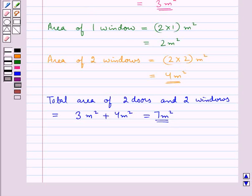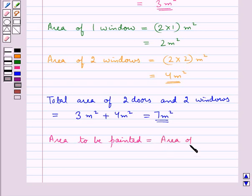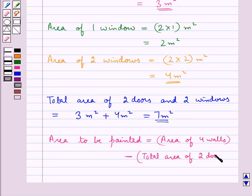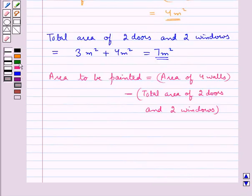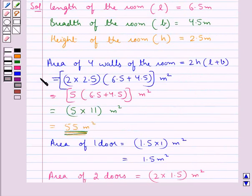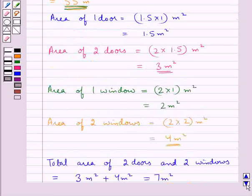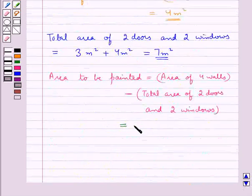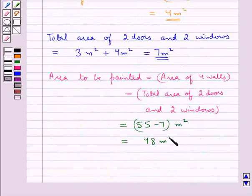Now, when we paint the room, we paint the walls but not the doors and windows. So the area to be painted equals the area of the 4 walls minus the total area of 2 doors and 2 windows, which is 55 minus 7 = 48 meter squared.